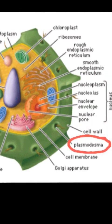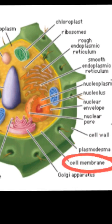Plasmodesmata is a gated cell wall channel for molecules and other cells to have communications. The cell membrane controls transport of materials entering and exiting, along with regulating.